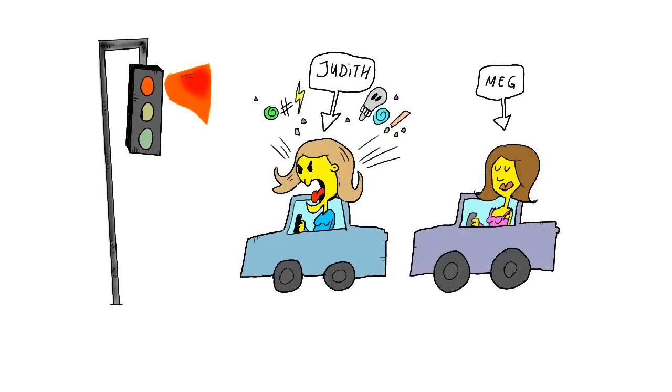Although it's quite clear for most people that they have to stop for a red light, for Judith, it also means that she will arrive late at her job interview. She will react very differently to the red light than Meg, who was not in a hurry at all.